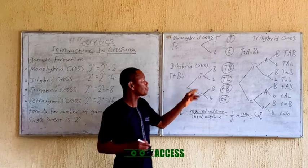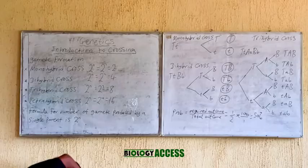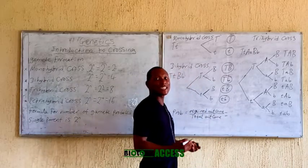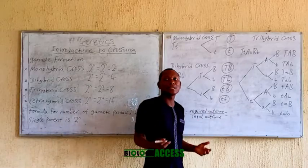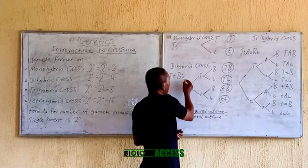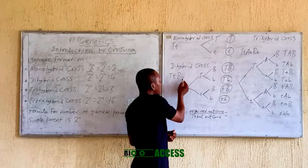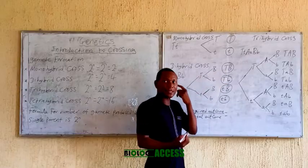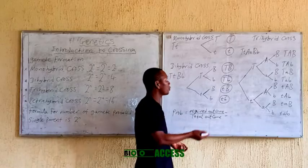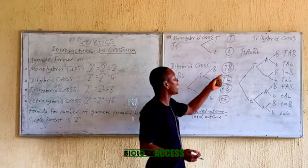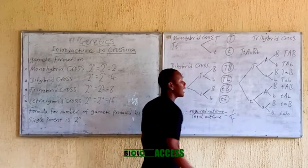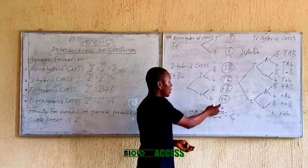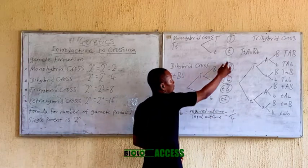Now for dihybrid cross, you do the same calculation. I can ask you: what is the probability of having a gamete that has the tall gene as well as the big size gene? The required outcome is 1. What is the total outcome? If I ask: what is the probability of having small t and small b among the gametes? It is the same thing. The required outcome is 1, and the total outcome is 4, so the probability is 1 over 4.